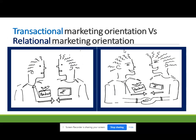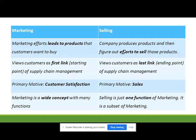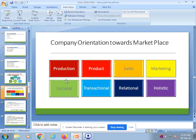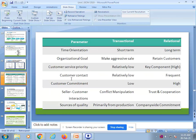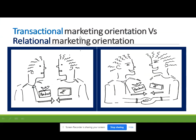What do you understand by transactional orientation? In the first cartoon figure there is a buyer and a seller just exchanging a product and money — that is transactional orientation. In the second figure on the right, that is relationship or relational marketing orientation, where there is not only exchange of product and money but also handshaking and smiling.